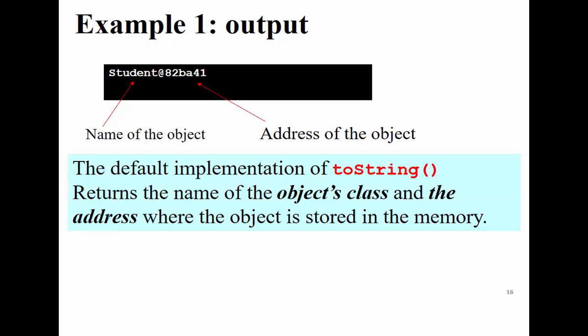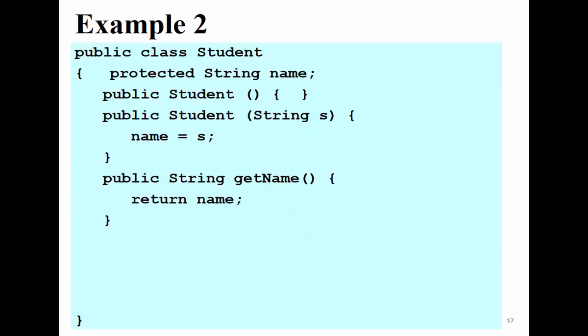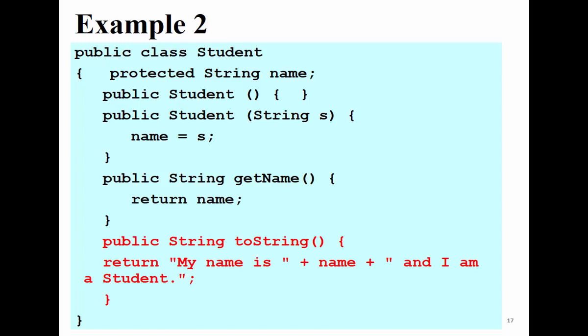To change the default behavior of toString, we override it inside our class. We provide `public String toString()` with the exact same signature, and we write our own implementation. In this case, we return `"My name is " + name + " I am a student"`. This string is the string representation of our object.